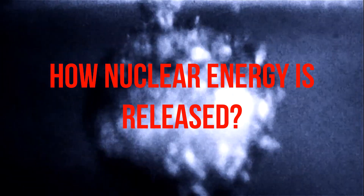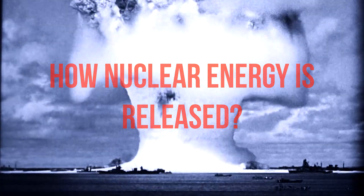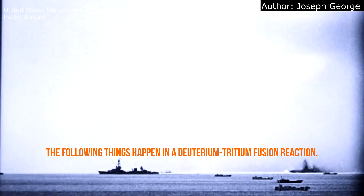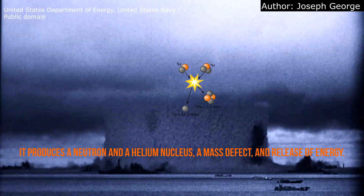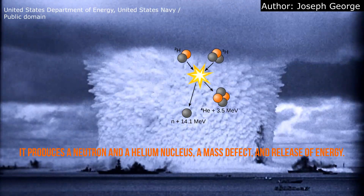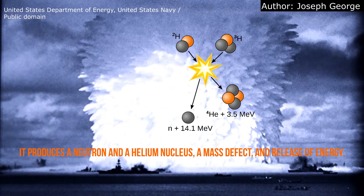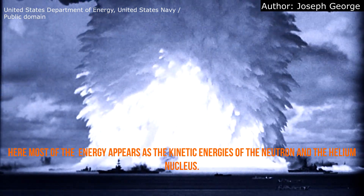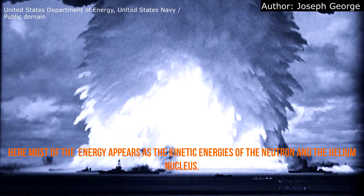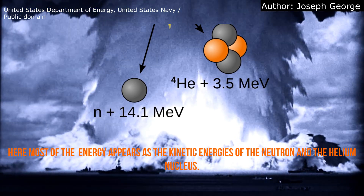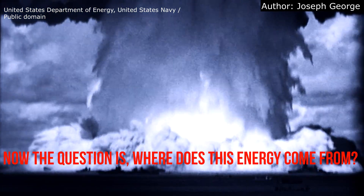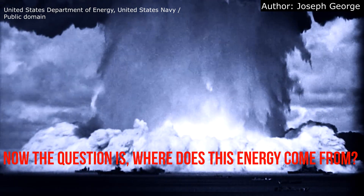Here we will discuss how nuclear energy is released. In a deuterium-tritium fusion reaction, the following things happen: it produces a neutron and a helium nucleus, a mass defect, and a release of energy. Most of the energy appears as the kinetic energies of the neutron and the helium nucleus. The question is: where does this energy come from?